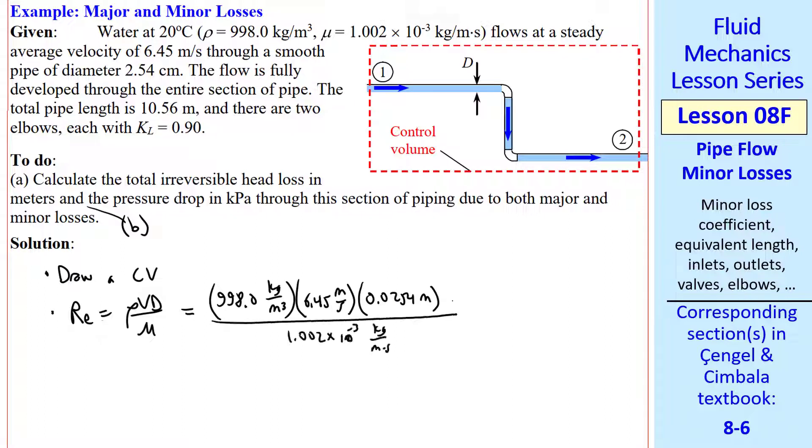I get about 163,000, which is definitely turbulent.